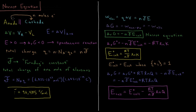As we've been discussing in all the previous videos in this chapter, we have an anode in our electrochemical reaction where oxidation occurs. Something gets oxidized, produces electrons, and those electrons flow from our anode to our cathode. At our cathode, those electrons are received and a chemical species gets reduced — it gains those electrons — completing the chemical reaction.